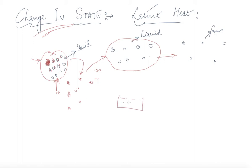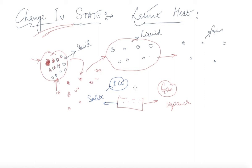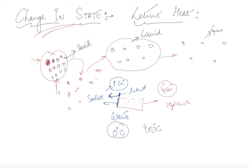For water, if you increase the temperature it goes into gas, that is vapor. If you decrease the temperature it goes into solid, that is ice. From 0 degree Celsius to 100 degree Celsius, water remains as liquid. After that it converts into vapor, and before that it converts into ice.